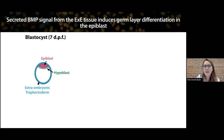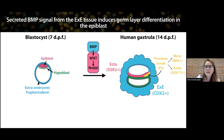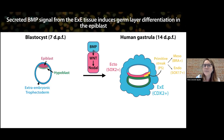When I joined the Warmflash lab I started to study human gastrulation, trying to understand how this patterning process is controlled by exogenous signals. During human gastrulation, the pluripotent epiblast differentiates into the three germ layers — ectoderm, mesoderm, and endoderm — and this is controlled by BMP from the extraembryonic tissues, which activates a cascade of signals in the epiblast. However, how cells interpret BMP and how this differentiation is controlled by this cascade of signals is not completely understood.